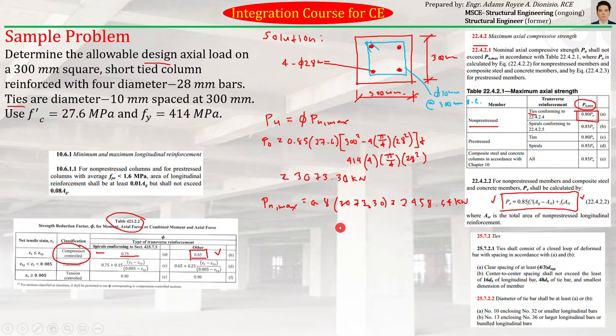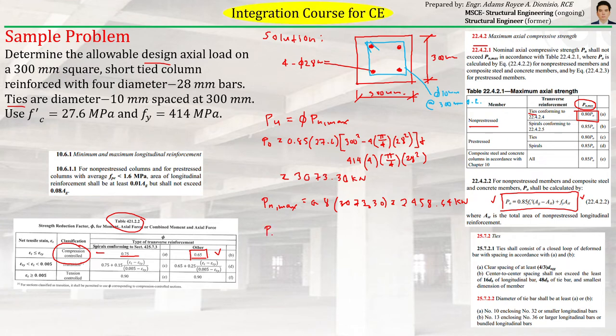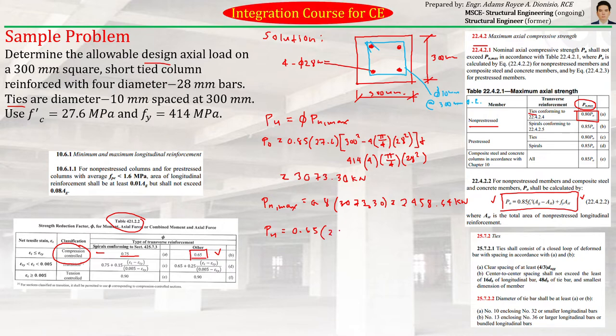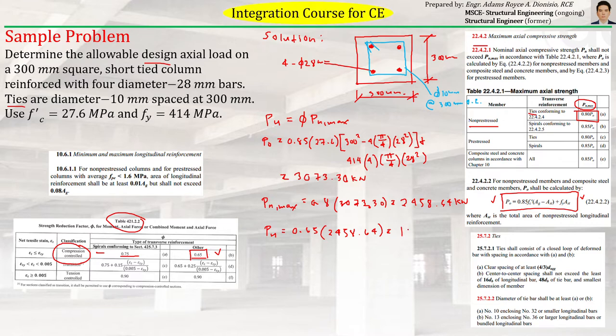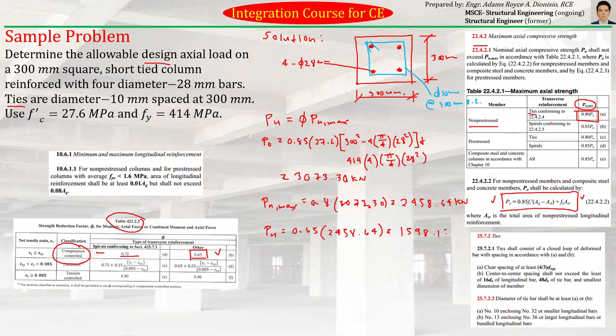But that is not the answer that we are searching for because what we need is the allowable design actual load. So we just have to multiply that PNMAX by phi to get PU. So our PU will now be equal to phi, which is 0.65 times PNMAX 2,458.64. So times 0.65 from earlier.